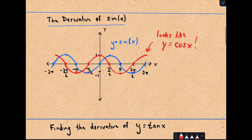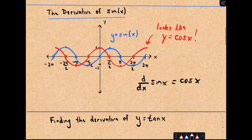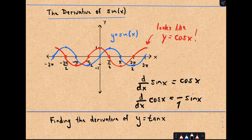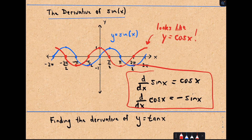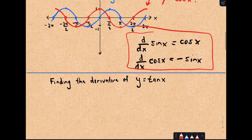This isn't a formal proof, but it looks a whole lot like the function cosine x—and that's exactly what happens. It turns out the derivative with respect to x of sine x equals cosine x. You can find the proof in any textbook or online; many use a clever geometric argument. And similarly, the derivative of cosine x is negative sine x. Be careful you don't forget that negative. These are two very fundamental derivative formulas you'll need for as long as you're taking calculus.